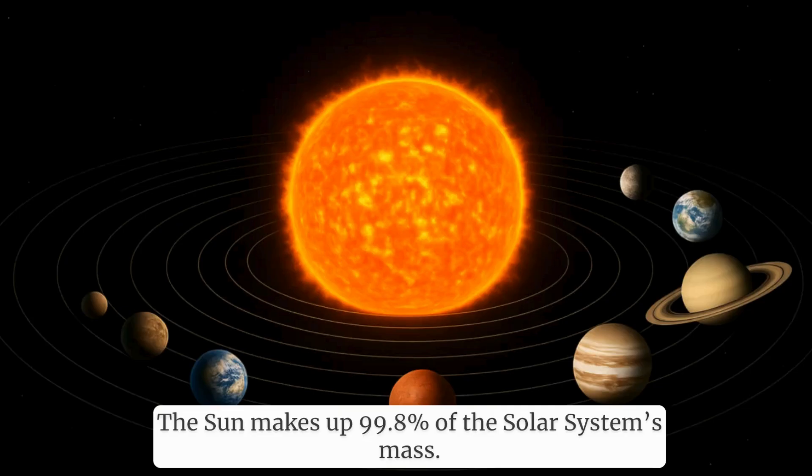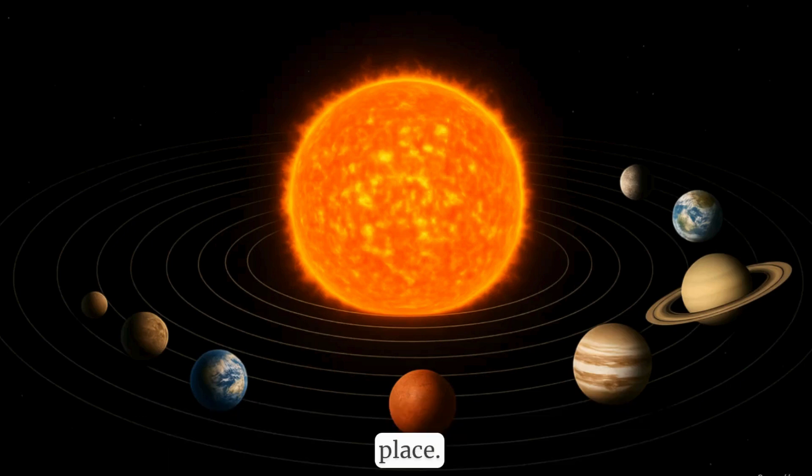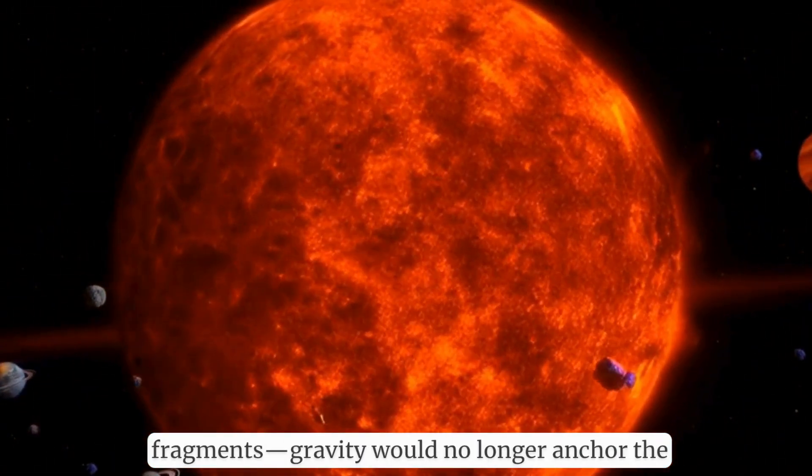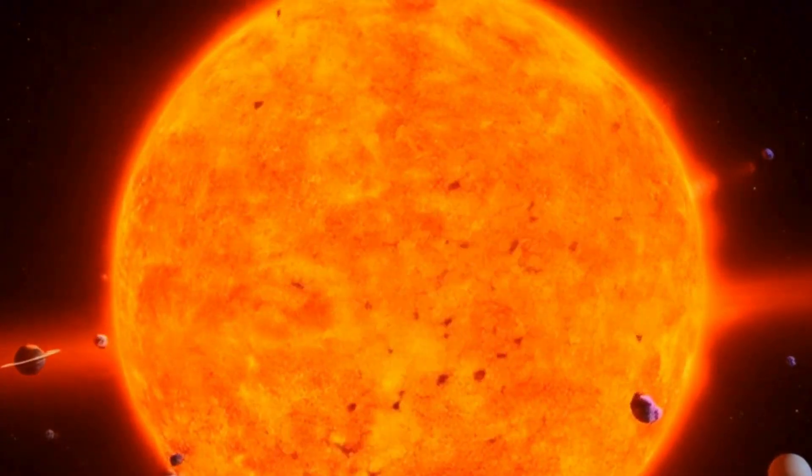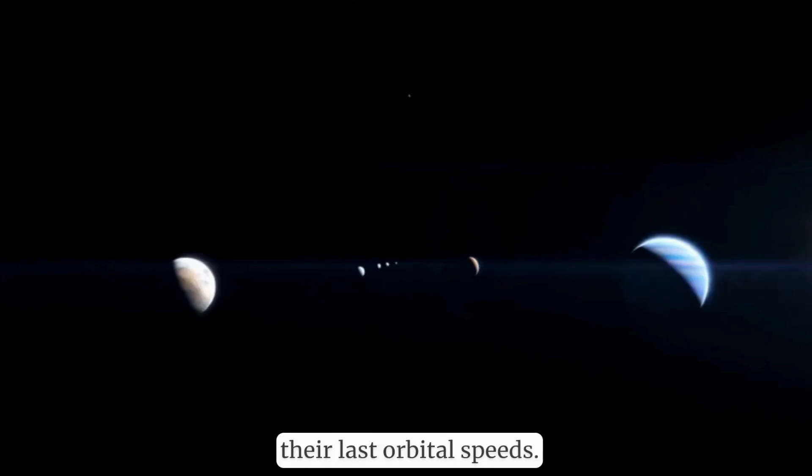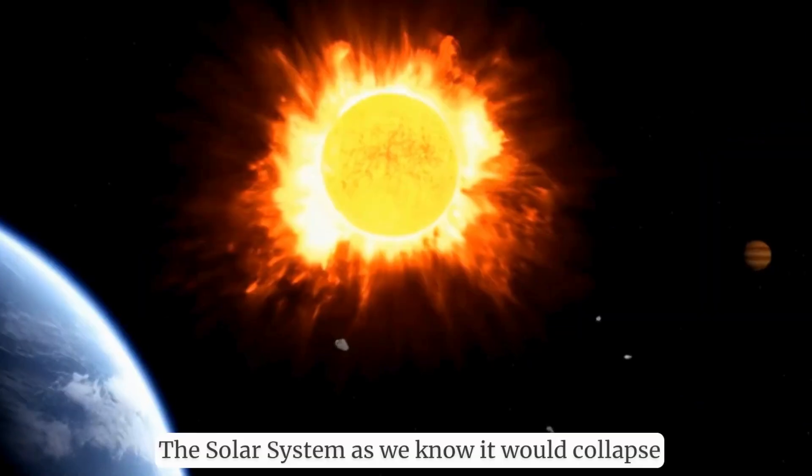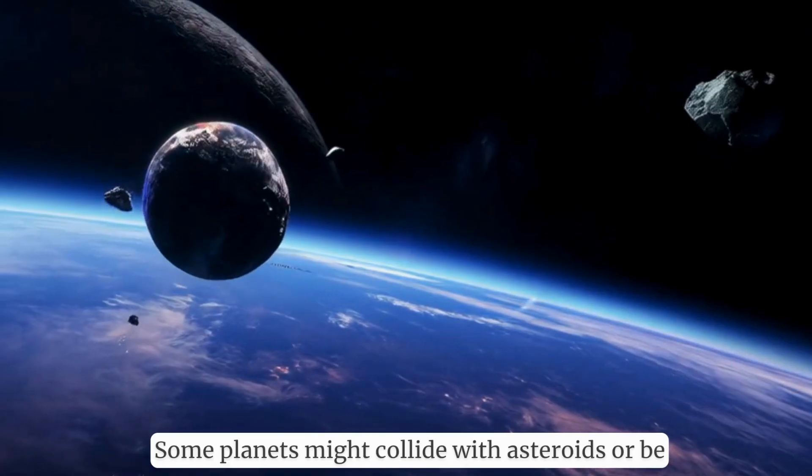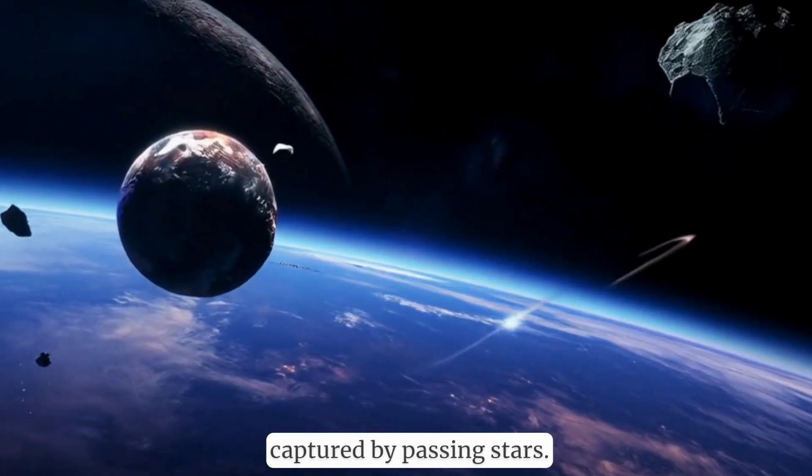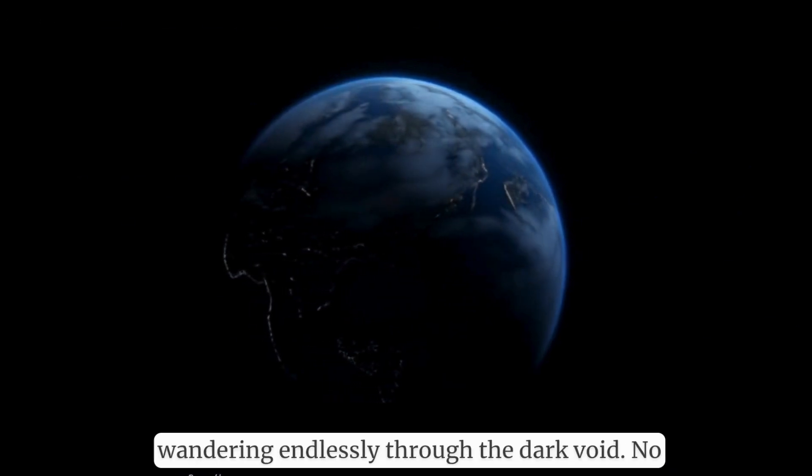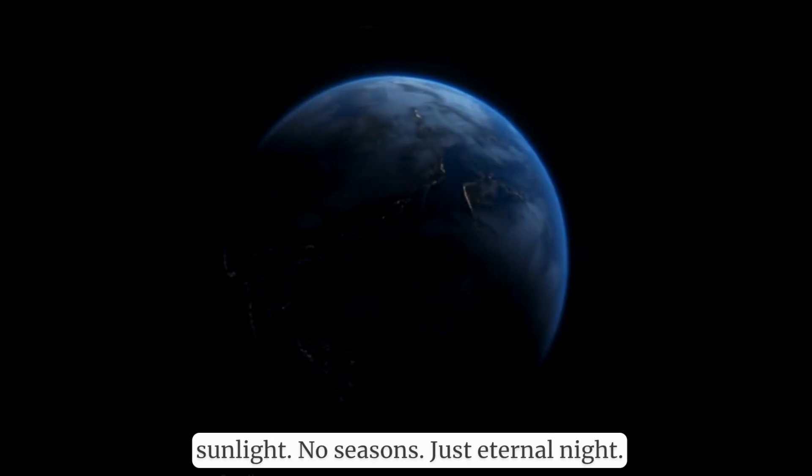Now let's talk about the solar system as a whole. The Sun makes up 99.8% of the solar system's mass. Its gravity keeps the planets neatly orbiting in place. If the Sun were suddenly gone, exploded into fragments, gravity would no longer anchor the planets. Earth, Mars, Jupiter, and the others would drift off into space, following straight-line paths at their last orbital speeds. The solar system as we know it would collapse into chaos. Some planets might collide with asteroids or be captured by passing stars. Imagine Earth, a frozen, radiation-burned rock wandering endlessly through the dark void. No sunlight, no seasons, just eternal night.